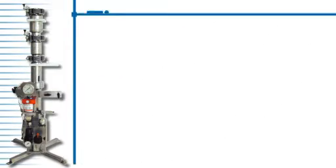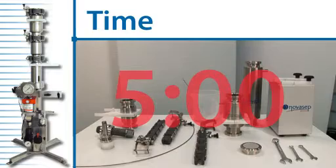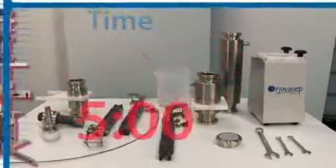Pack-n-Sep has the fastest packing and unpacking system, which grants you flexibility on the choice of your stationary phase by allowing change in less than five minutes.